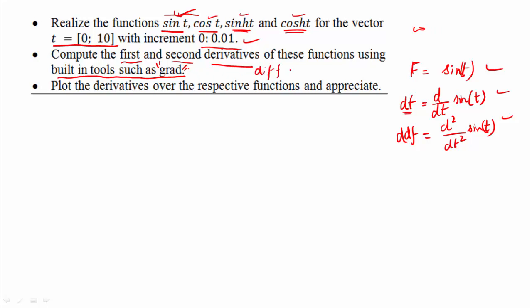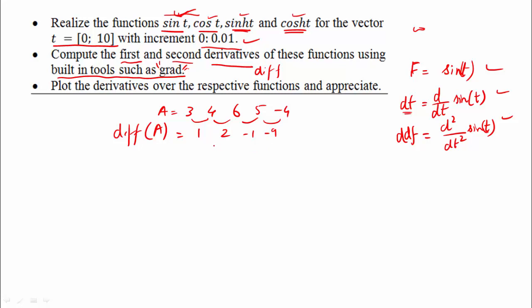Suppose I have an array A with values 3, 4, 6, 5, minus 4. In MATLAB, diff(A) gives us the differences between consecutive elements. So if we have five values, diff(A) gives four values — it loses one value. If we use diff of diff, we get three values — double differentiation.